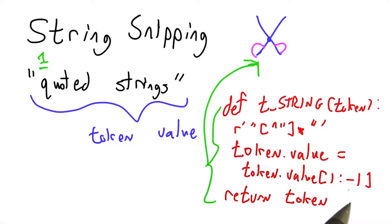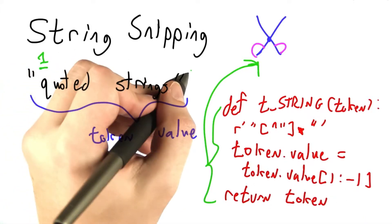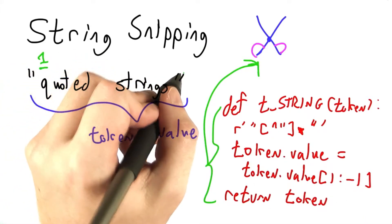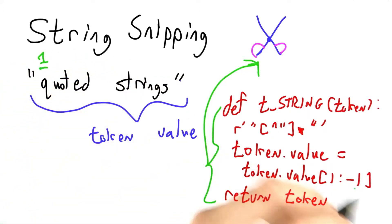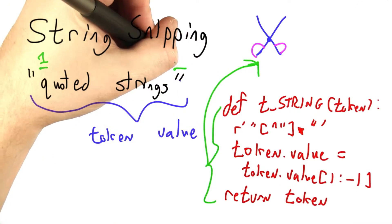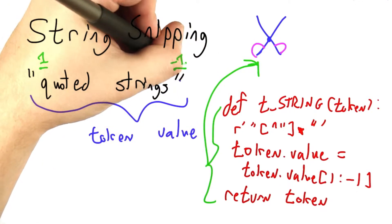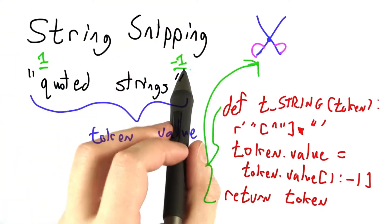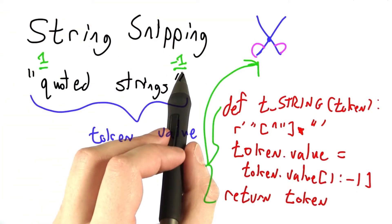Now if you haven't seen this trick before in Python, this might surprise you, but you can count back from the end of the string using negative numbers. So this is actually the negative first character.